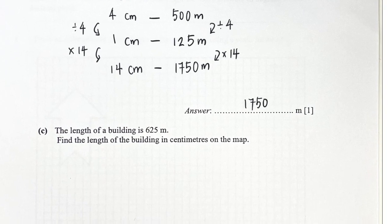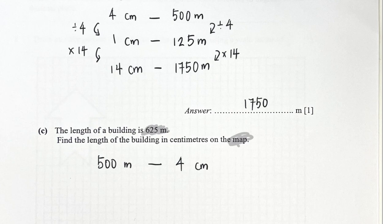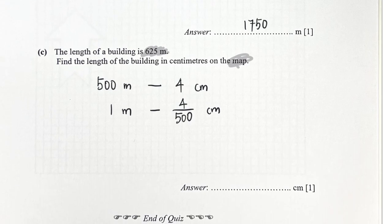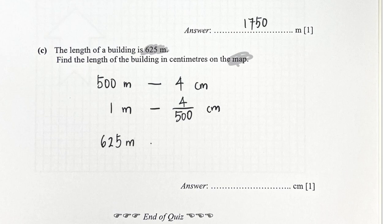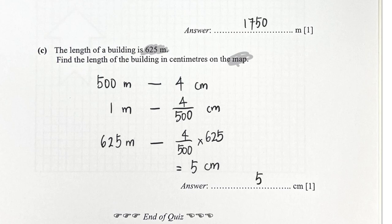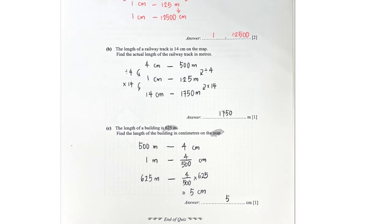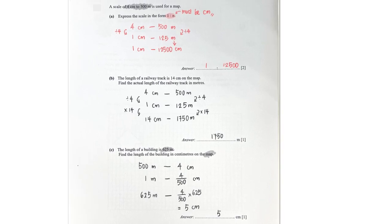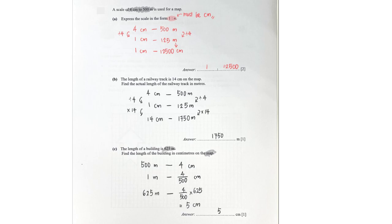Last but not least, they give the actual length in metres and ask me to find the distance in centimetres on the map. Since 500 metres is represented by 4 cm, dividing by 500 gives 1 metre on the map. Then multiplying by 625 gives 5 cm on the map. And with that we have come to the end of this video — if you like it, give it a thumbs up. Thank you for watching and have a nice day!